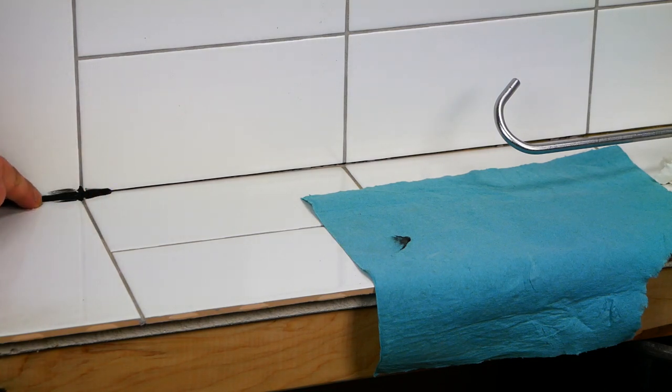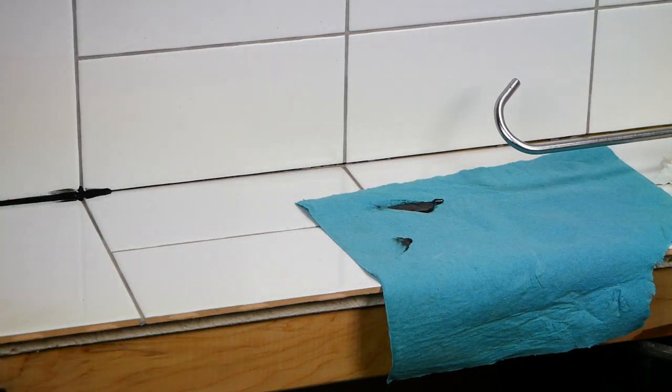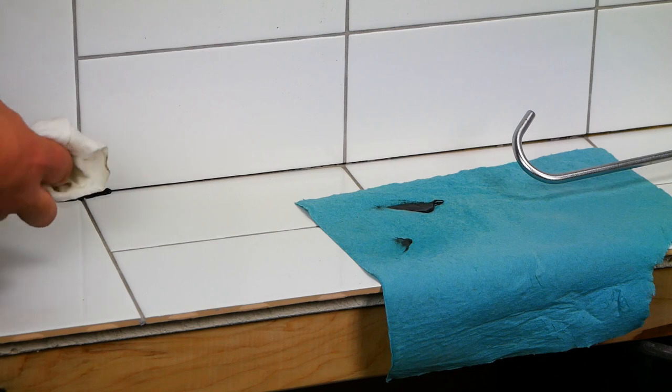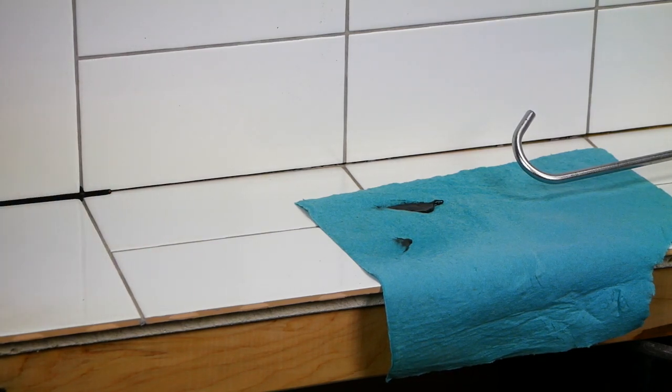I'm going to take my finger here and tool it off. You can see it's a little bit messy, so I'm going to take that rag and spray some more alcohol on it and clean that up.